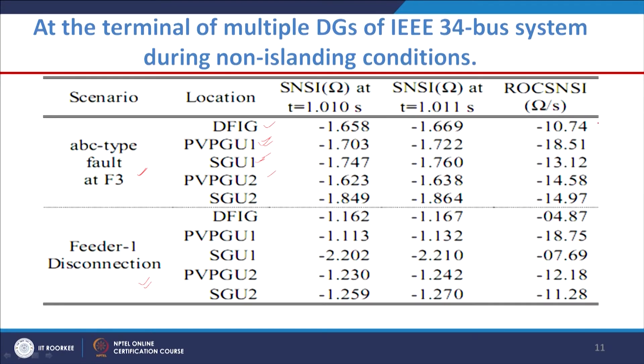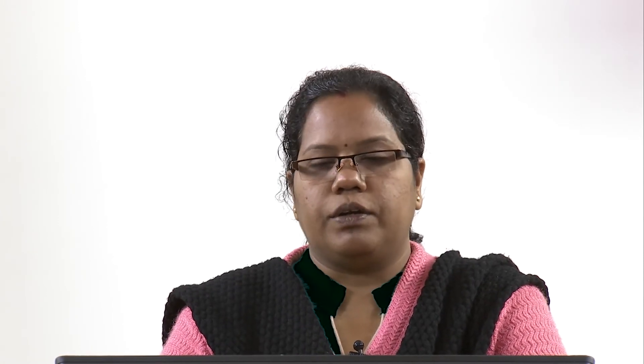Looking at the rate of change of superimposed negative sequence impedance column for non-islanding events, all values are clearly below ±20, confirming the technique is robust even for different non-islanding conditions. We also tested the technique for different types of inverter control strategies used for renewable sources, such as P/f and Q/V droop control for voltage source inverters (VSI).